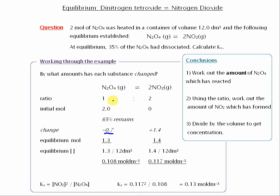Then we use the ratio to work out the amount of NO2 which formed. So this ratio of 1 to 2, we then could work out the amount of NO2 which formed was double that. Then once we've worked out the equilibrium moles, we divided by the volume to get the concentrations. Put them into the expression for Kc. And there we've got our answer.